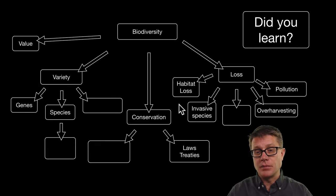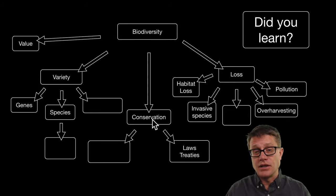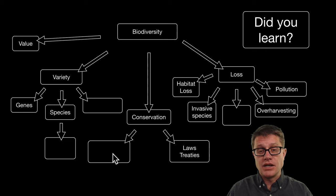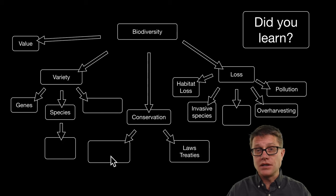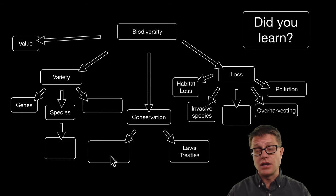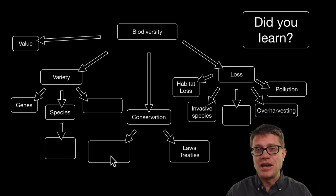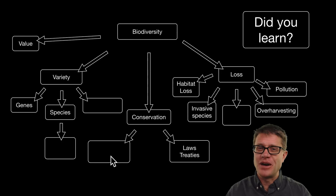HICOP stands for habitat loss, invasive species, climate change, overharvesting, and pollution. And then how do we solve this? Through conservation we figure out the status of those organisms or ecosystems, and then we start to protect them through laws and treaties. And it is also the last of the videos on AP Environmental Sciences. I hope that was helpful.